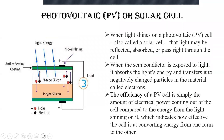We all know about what a photovoltaic cell is, which is shortly called a PV cell. Here you can see an N-type and P-type silicon semiconductor, and we will be seeing how this photovoltaic cell works.